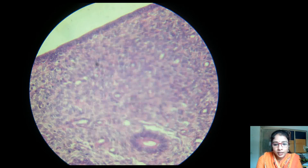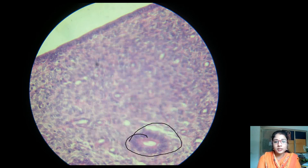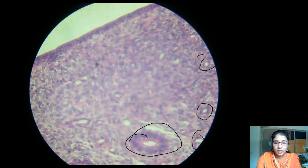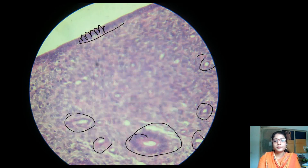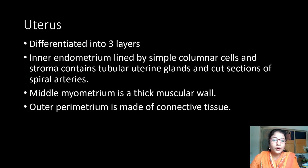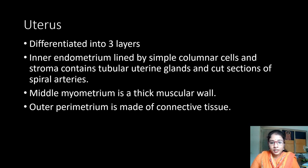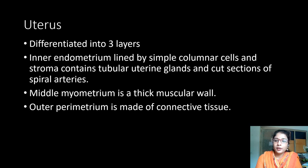The myometrium is quite thick and its muscle layer cannot be differentiated into distinct circular or longitudinal layers — the muscles are present in all directions: circular, oblique, and longitudinal. At 45x we can see the uterine glands and spiral artery cut sections, with the simple columnar epithelium resting on a basement membrane. Identification points: three layers — endometrium, myometrium, perimetrium; endometrium contains tubular uterine glands lined by simple cuboidal or columnar epithelium; myometrium is the muscular wall.